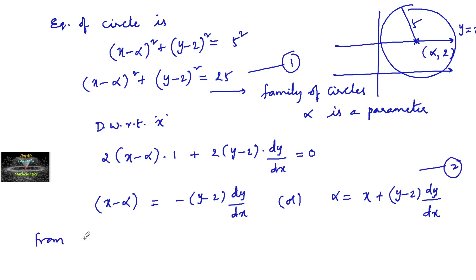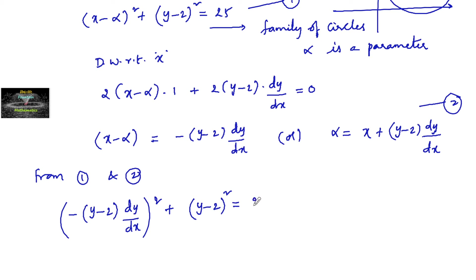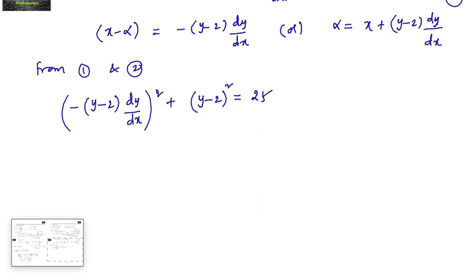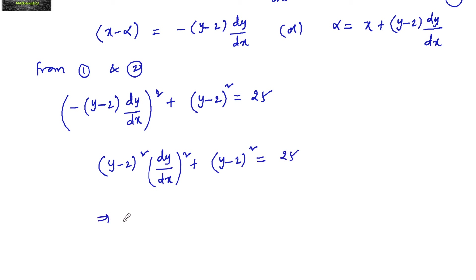Substituting from equation (2) into equation (1): (x − α)² becomes [(y − 2)·dy/dx]², so (y − 2)²·(dy/dx)² + (y − 2)² = 25. That gives (y − 2)²·(y')² = 25 − (y − 2)².